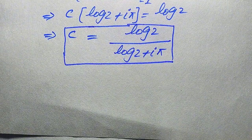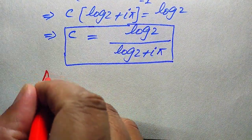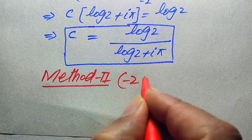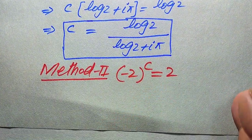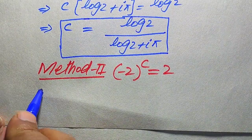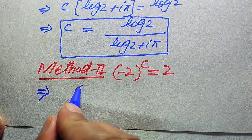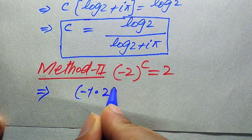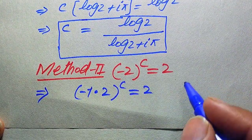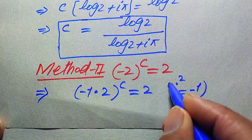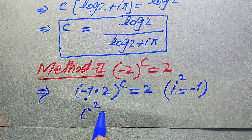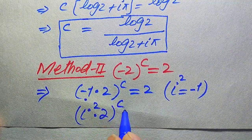Now we solve this problem using the second method. The given equation is minus 2 to the power of c equals 2. We rewrite minus 2 as minus 1 multiplied by 2, whole power c, equals 2. In the second method, we use the fact that iota squared equals minus 1. We replace minus 1 with iota squared, giving: iota squared times 2, whole power c, equals 2.